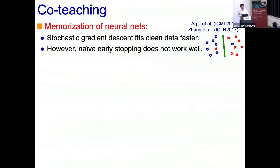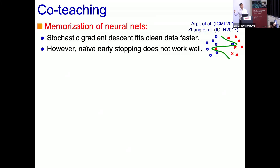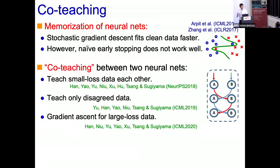Apart from theoretical approaches, we also have a very heuristic approach called co-teaching, which exploits the memorization properties of neural networks. Given training points, stochastic gradient descent within a few epochs gives a reasonable solution, but fitting all training data including noisy labels requires many more iterations to change the decision boundary. This means early stopping is quite useful — a heuristic from the 1980s — but implementing it correctly is difficult in practice. So we decided to use two networks, which is why it's called co-teaching.